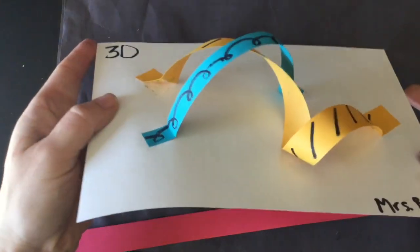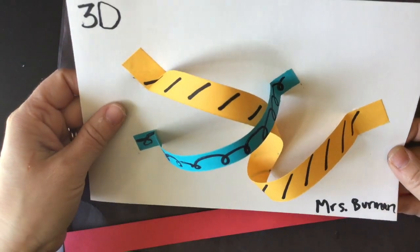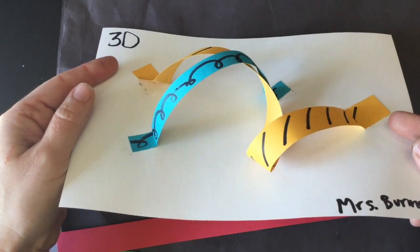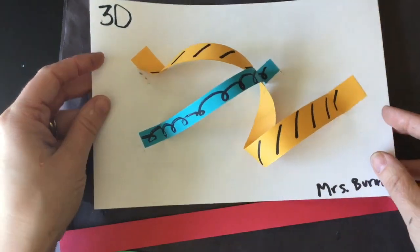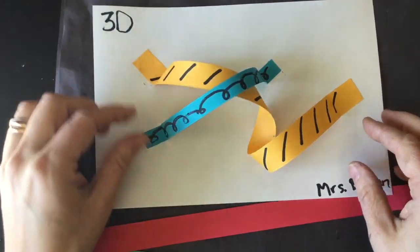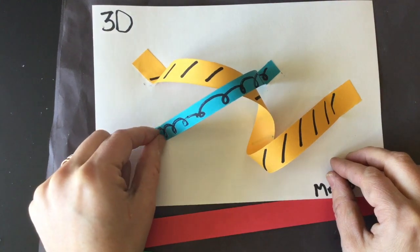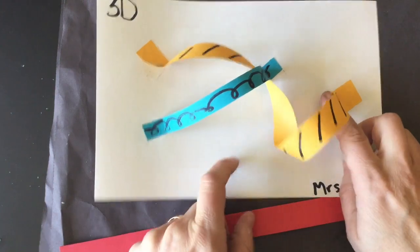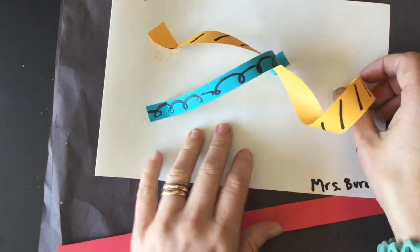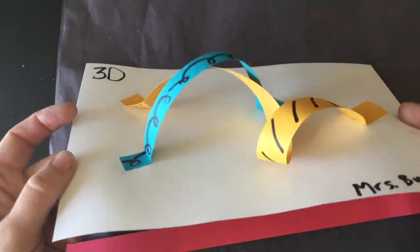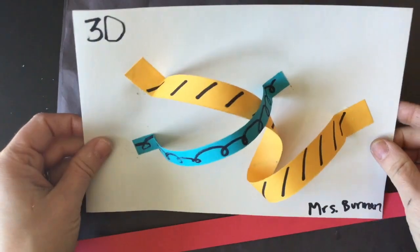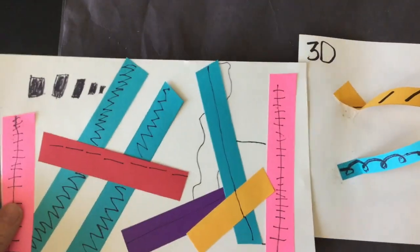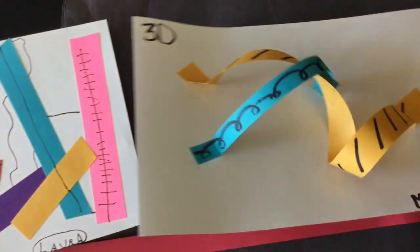At the end, you might have created a little amusement park or roller coaster for an imaginary ladybug who could travel along your roller coaster ride. So you might have fun thinking about this as an amusement park for a ladybug. And you can compare your two-dimensional collage with your three-dimensional sculpture.